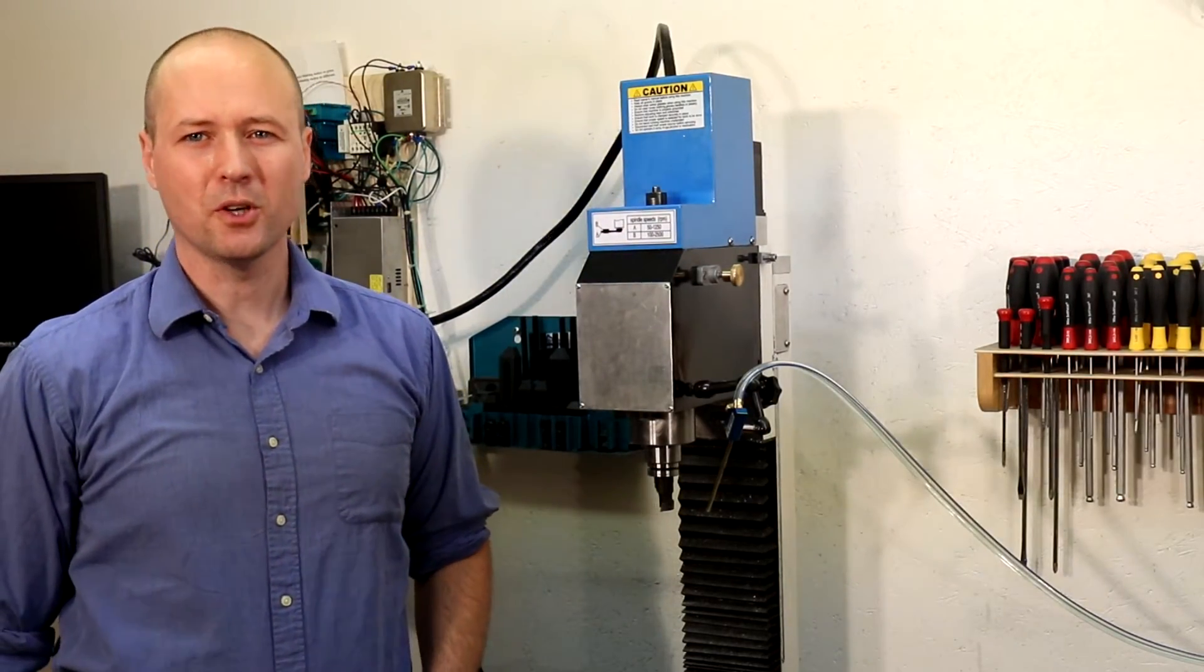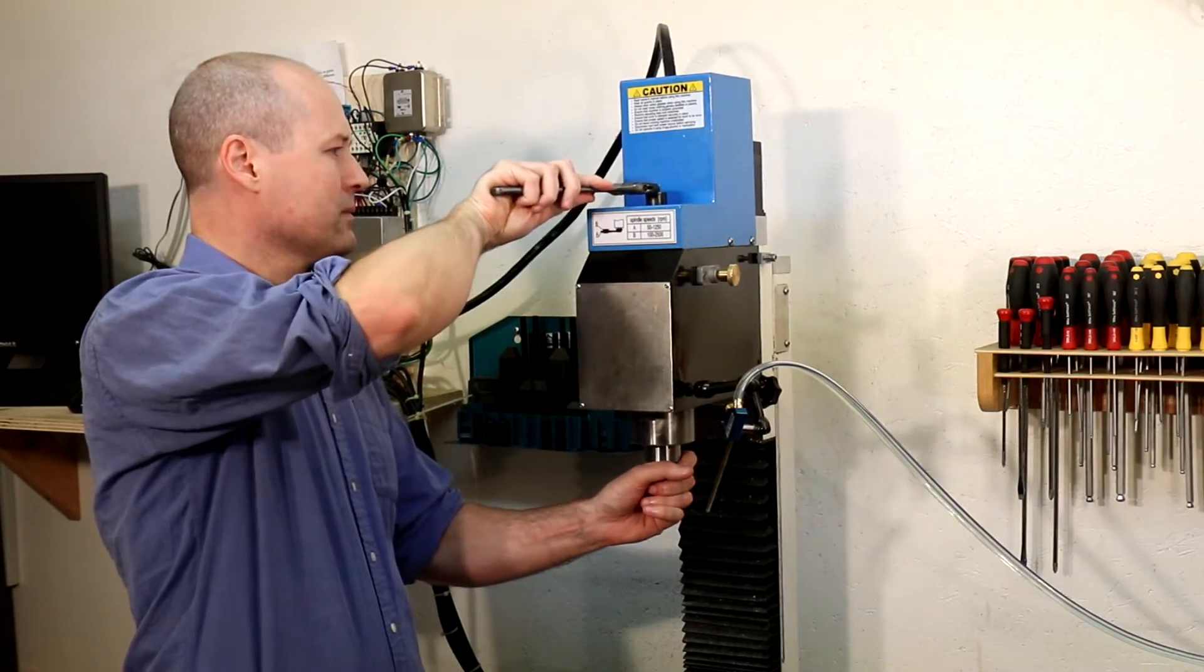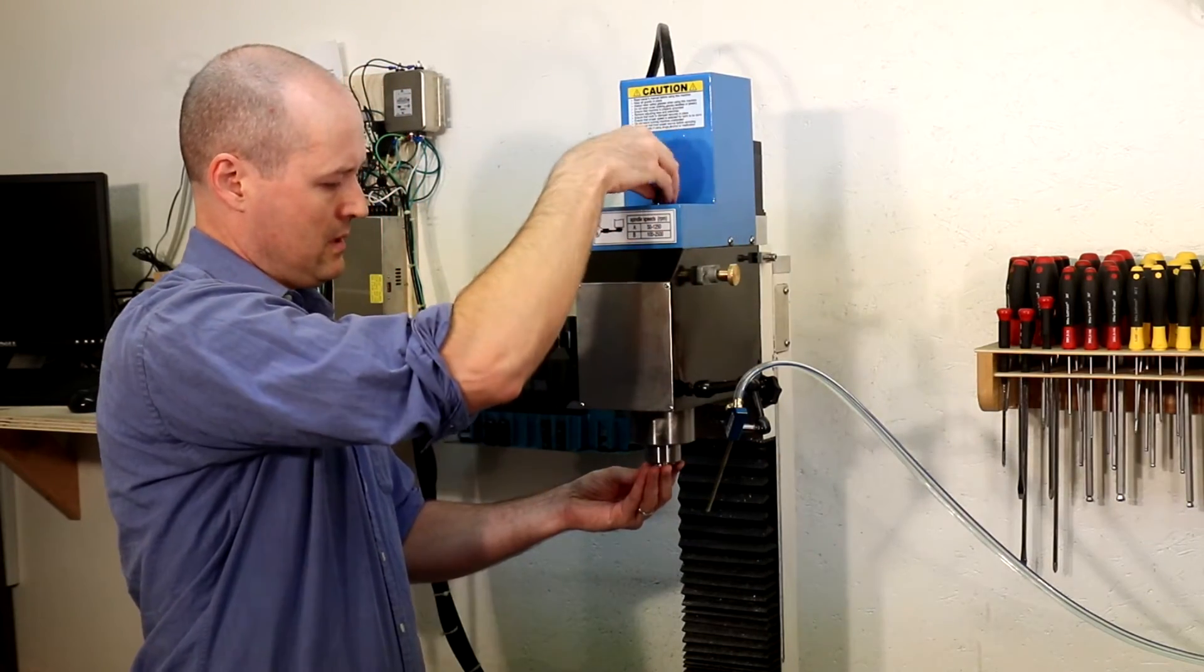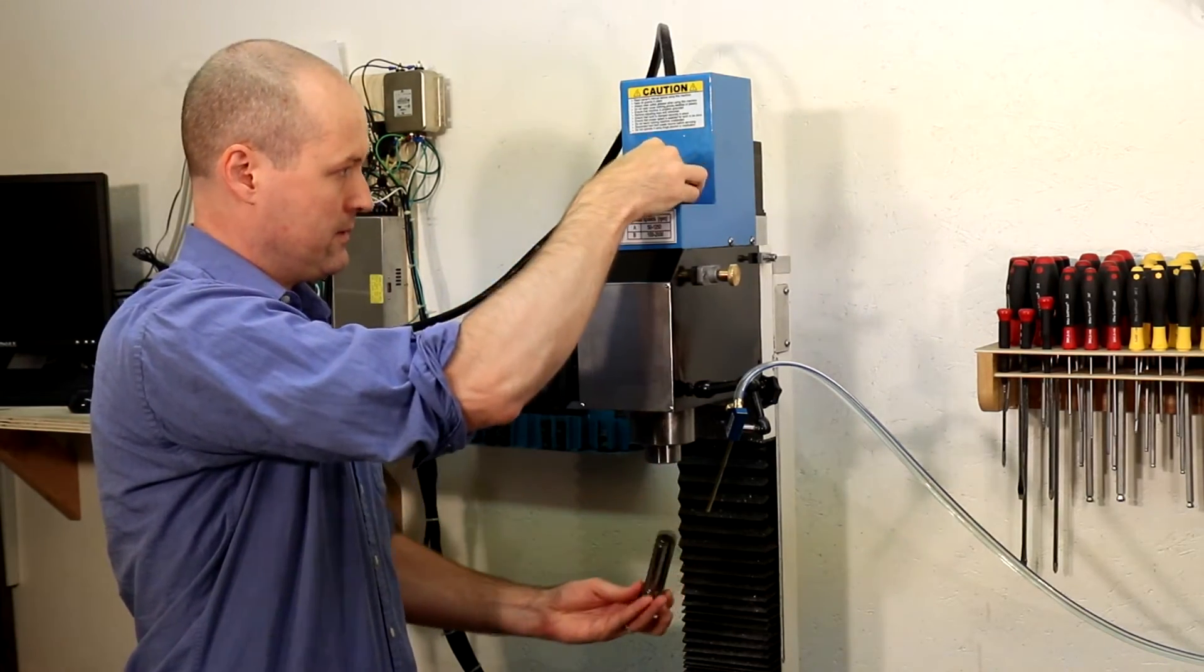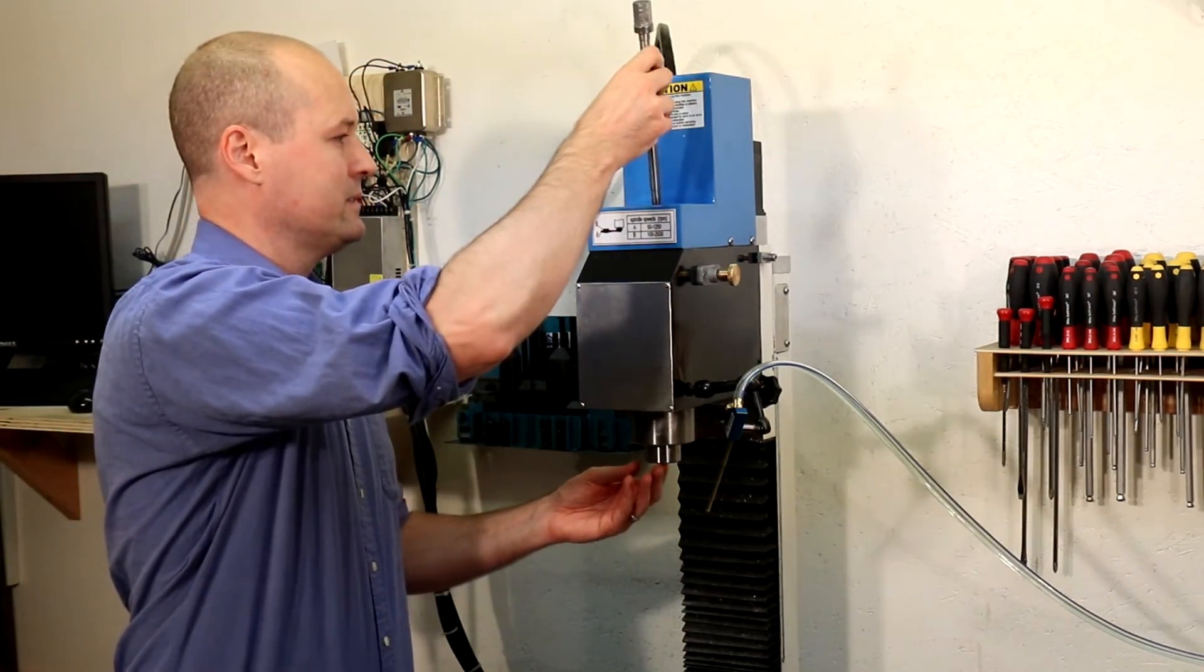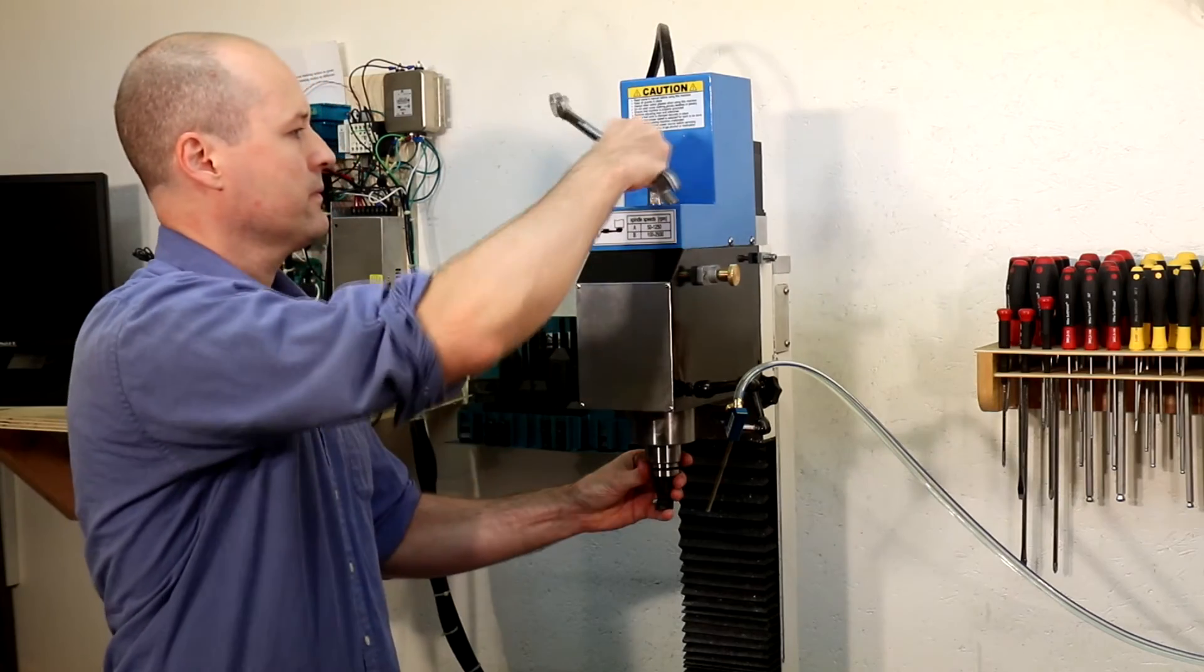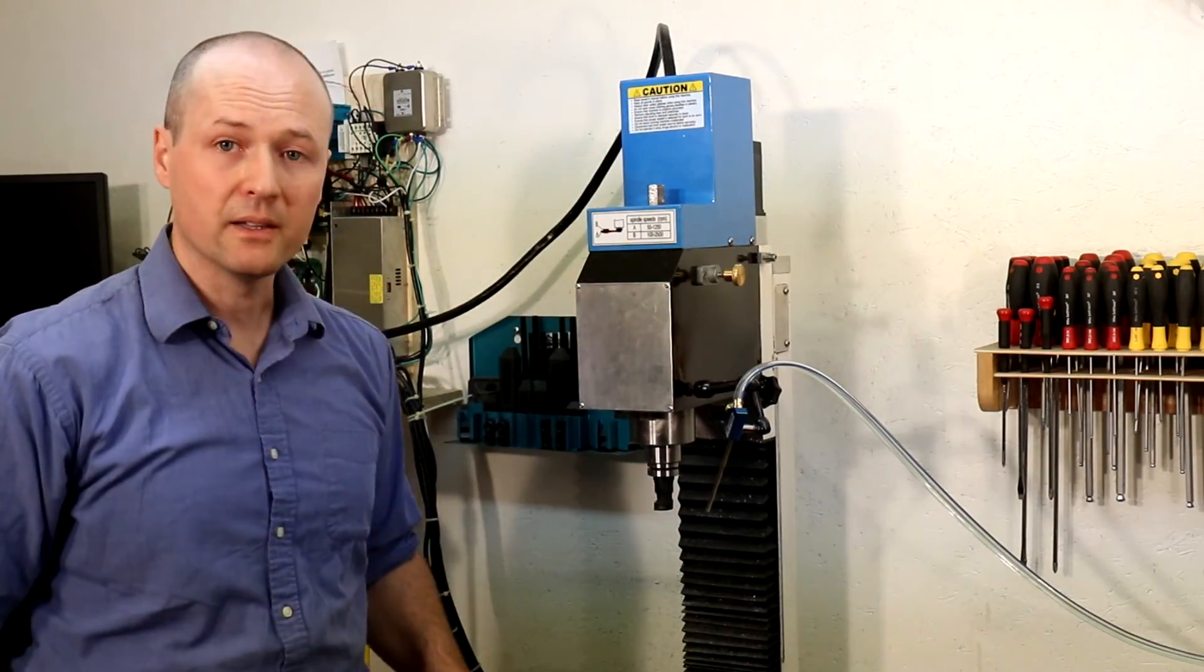And now we remove the old drawbar one last time. We will not be using this cup any longer. Just loosen the drawbar and remove the collet. Pull the old drawbar out. And in with our new drawbar. It's a lot easier to spin this one by hand. Okay that's gonna be really nice.